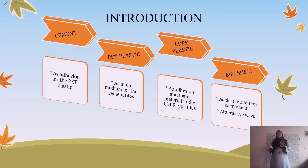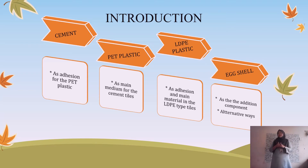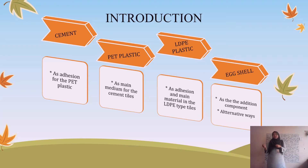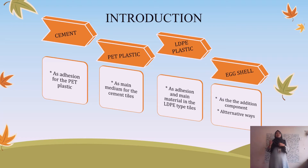For introduction, we have four elements inside our project, which is making two types of tiles. One is made using the PET plastic and one is using the LDPE plastic. For the PET plastic, we are using cement as the addition, and the PET plastic as the main medium inside the tiles. While for the LDPE plastic, we are using LDPE itself as the main material, and the egg shell is put into both types as an additional component — it is an alternative way to replace the sand.